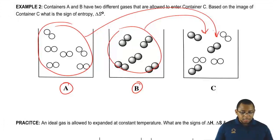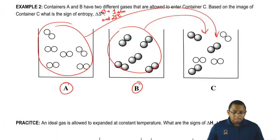Based on the image of container C, what is the sign of entropy, delta S? Here this little zero here just means standard conditions. When we say standard conditions, we mean 1 atmosphere and 25 degrees Celsius. That's our standard state when we're talking about thermodynamics.